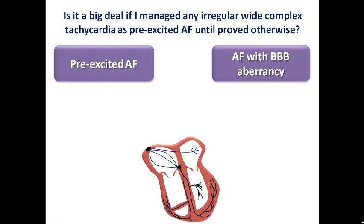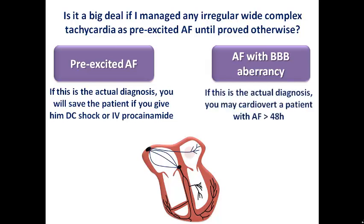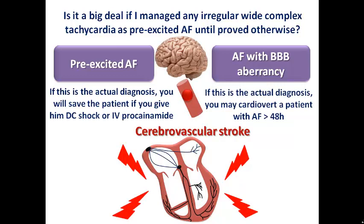The patient may truly have pre-excited AF, which is a very grave diagnosis, or AF with bundle branch block, which is not as dangerous and just needs rate control. If the patient is pre-excited AF and correctly diagnosed, you will save the patient by giving DC shock or IV procainamide, which can slow accessory pathway conduction. But if the patient has AF with bundle branch block and you manage them as pre-excited AF, the problem is that this patient may have had AF for more than 48 hours, and when you give DC shock, you may mobilize a thrombus from the left atrial appendage.